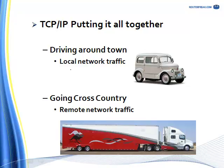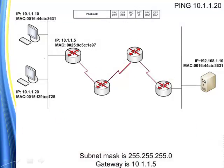With local network traffic, we never hit a router. Whereas with cross-country traffic, we are going to hit a router. Our remote network traffic will hit a router because it leaves our local network segment. Here's a sample network that we're going to play with, and we'll start by following our little packet across our local network only.